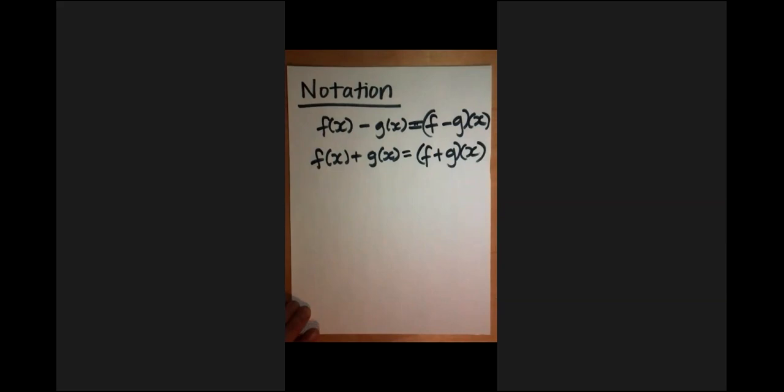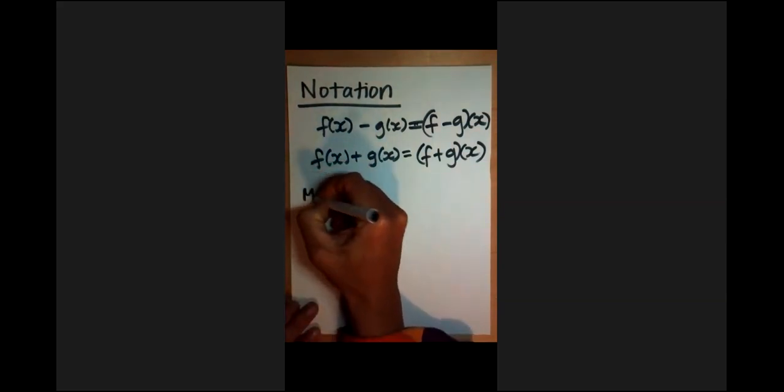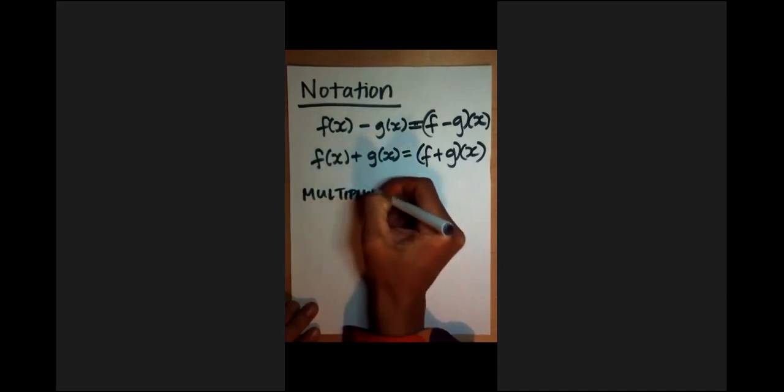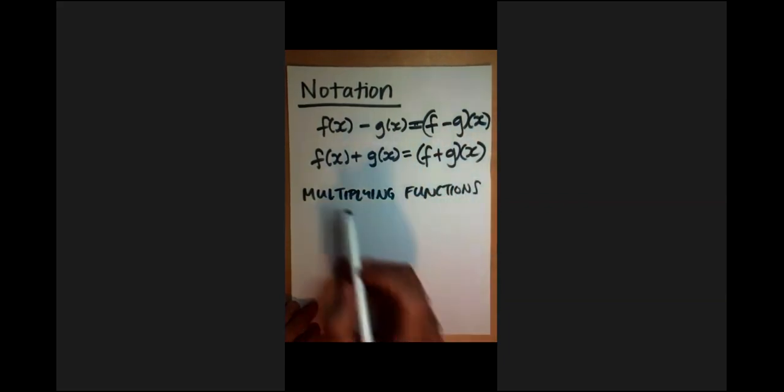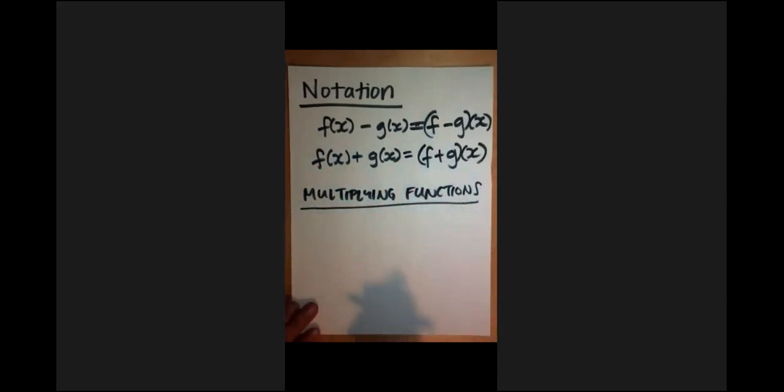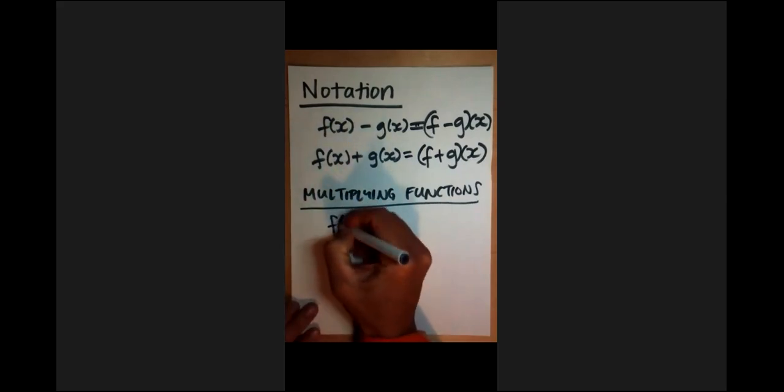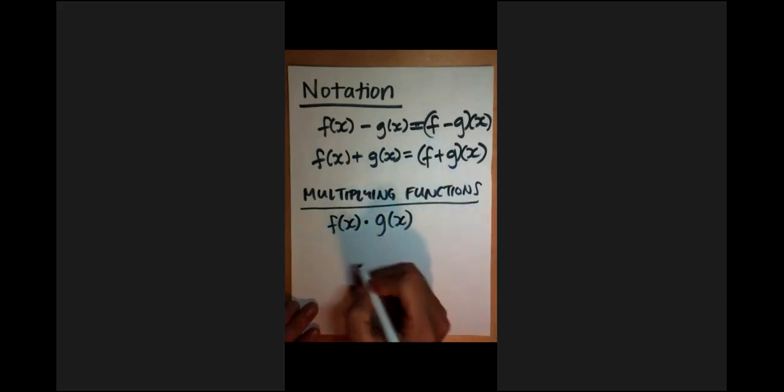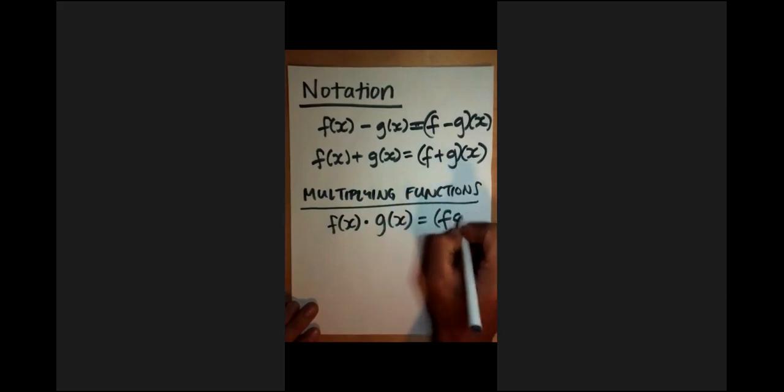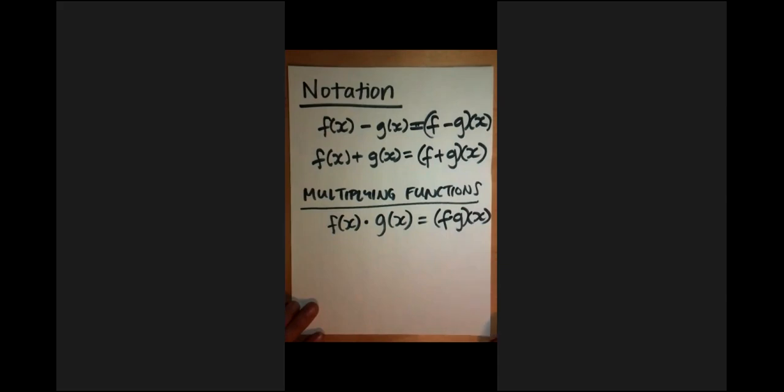Now we're going to talk about multiplying functions. It's not quite as simple, though it's exactly as you would imagine it to be - you're going to multiply two functions. So f of x times g of x, or we might see that as f times g of x. Actually, I think it usually has a little dot in there: f dot g of x. So let's talk about multiplying functions.